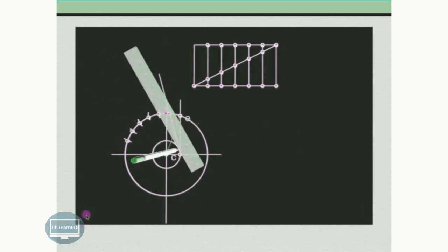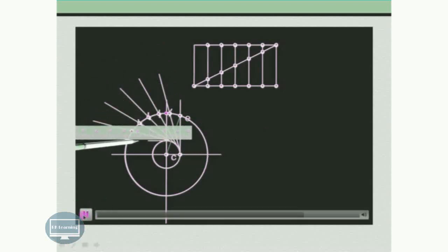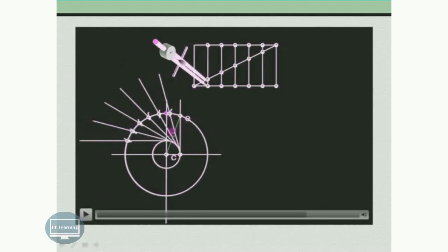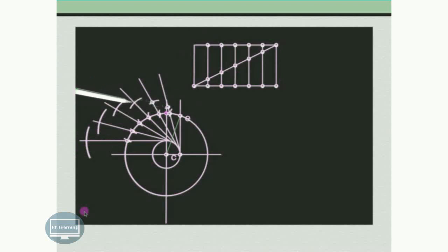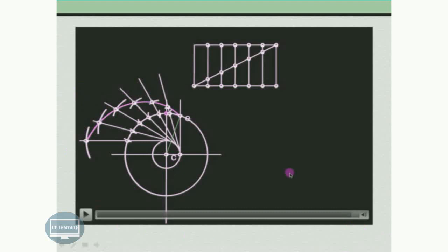Draw tangents from each of these points to the offset circle. These are all the tangents drawn from each point on the cam circle to the offset circle. Now transfer the distances: 1a on the first tangent line, 2b on the second tangent line, 3c on the third tangent line, 4d on the fourth, and so on. Then draw a smooth curve passing through all these points — this is how we draw the cam profile in case of the offset follower. Mark the points of intersection and draw a smooth curve through them. The same procedure can be adopted for the return stroke also.